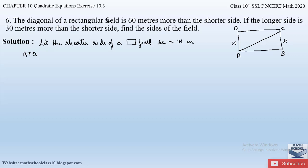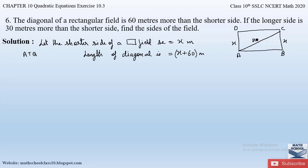According to the question, the diagonal of the rectangular field is 60 meters more than the shorter side, so the length of the diagonal is x + 60 meters.